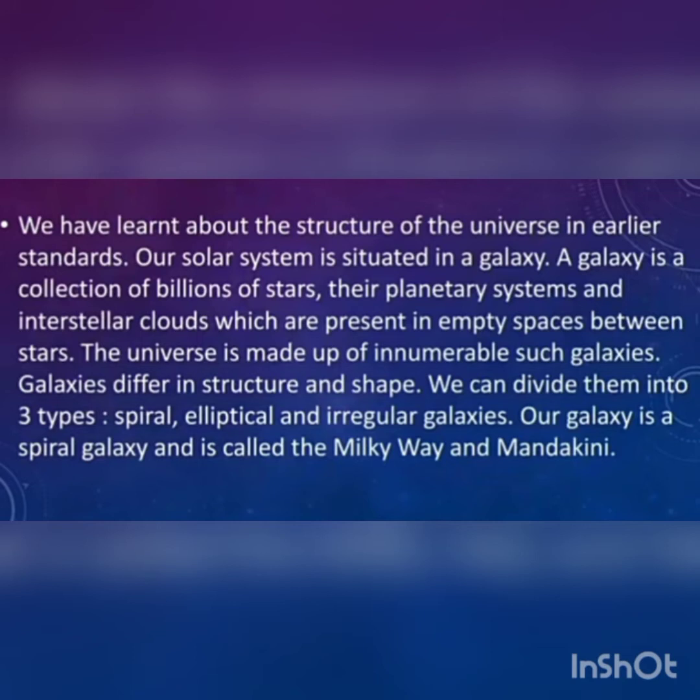A galaxy is a collection of billions of stars, its planetary systems, and interstellar clouds which are present in the empty spaces between the stars. The universe is made up of innumerable such galaxies. Galaxies differ in structure and shape. We can divide them into three types: spiral, elliptical, and irregular galaxies.